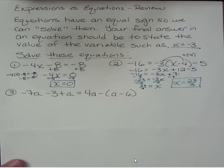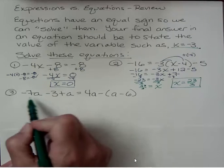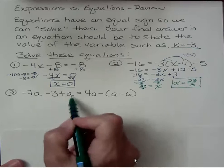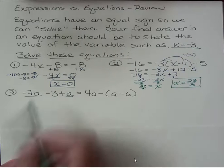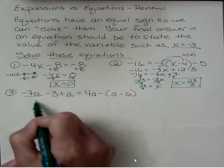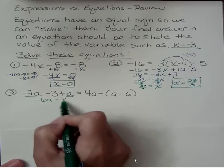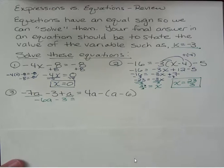So negative 7a and positive a. Those are like terms over here. So I'm going to combine those. I have seven negatives and one positive. So I have six negatives. You always simplify both sides of the equation before you start using moving things left or right.